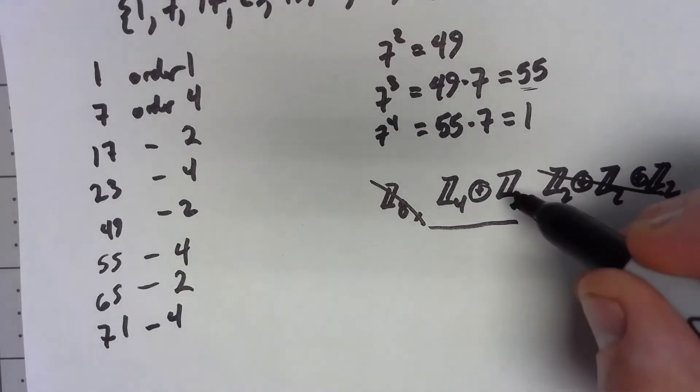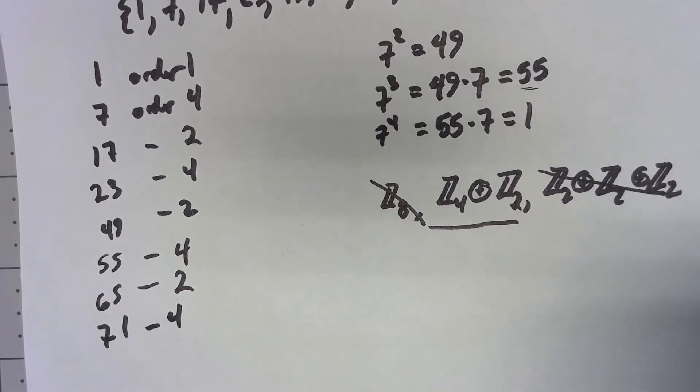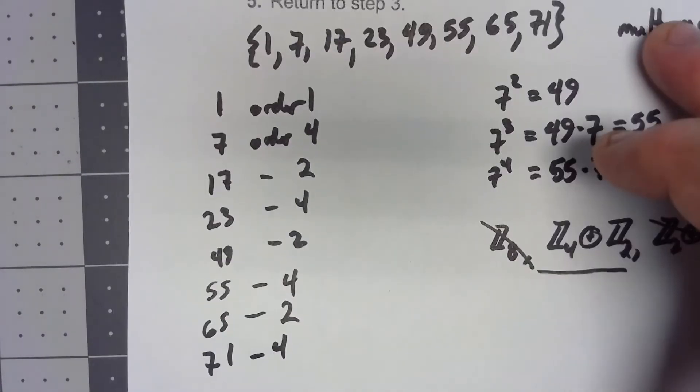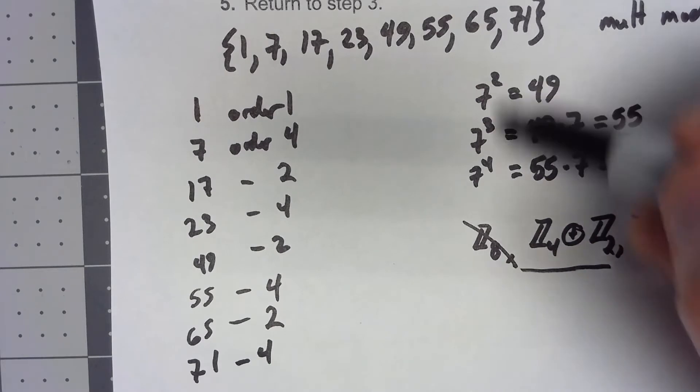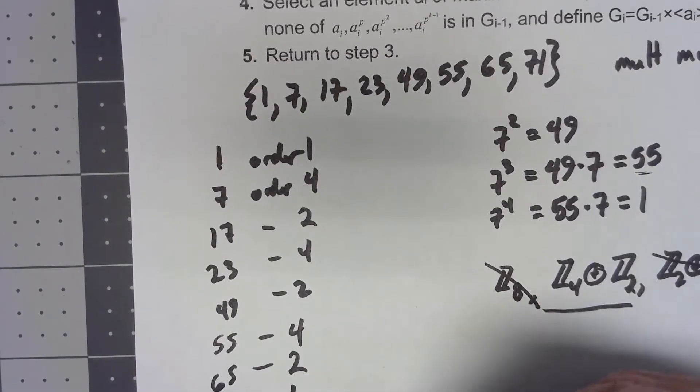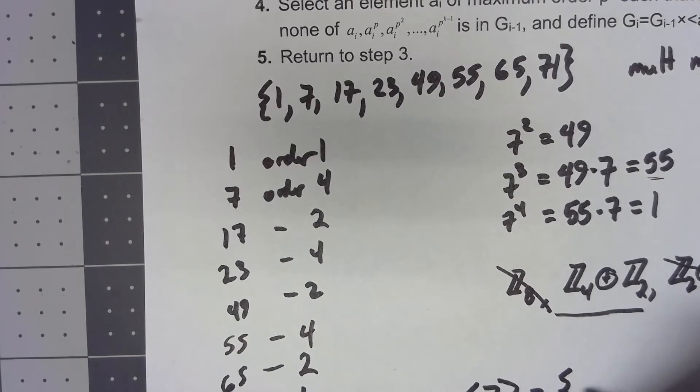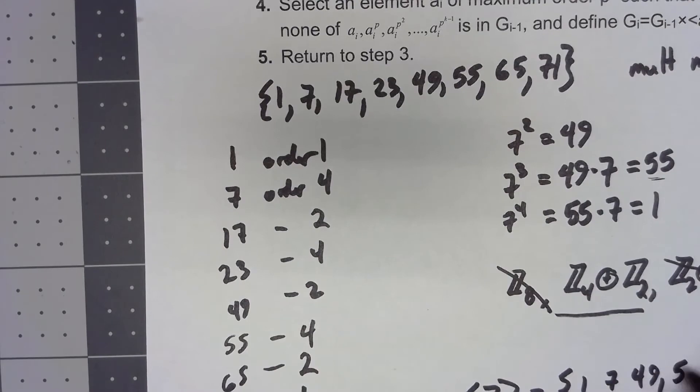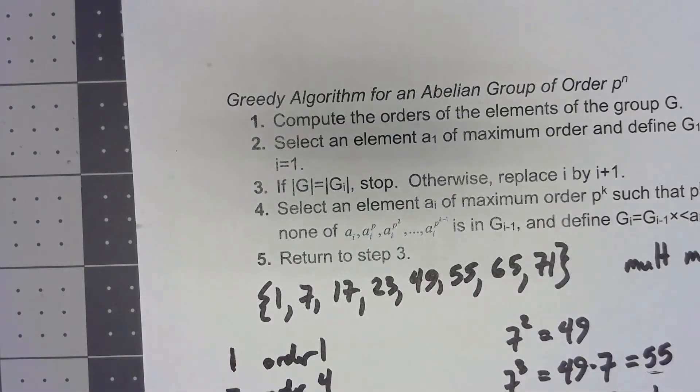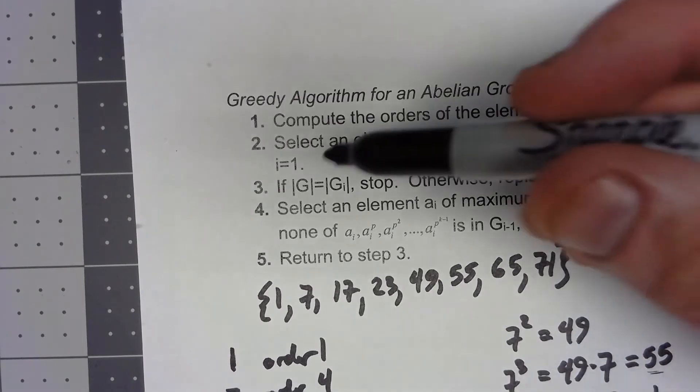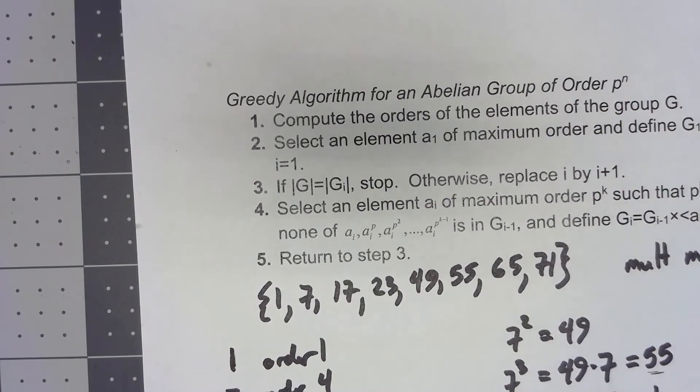But we want to do more than that. We want to do more than what the external direct product is isomorphic to. We want to actually figure it out explicitly as an internal direct product. So what we can do is take any one of these elements of order 4. Because we went through and showed what all the powers of 7 was, I'm going to take that. So I'm going to define G1 is equal to the cyclic subgroup generated by 7 which would be 1, 7, 49, and 55. Now that's not the entire group. So what I'm going to do is say that i is equal to 1 at this point. This is not the entire group. So I'm going to replace i by i plus 1 so i is now equal to 2.